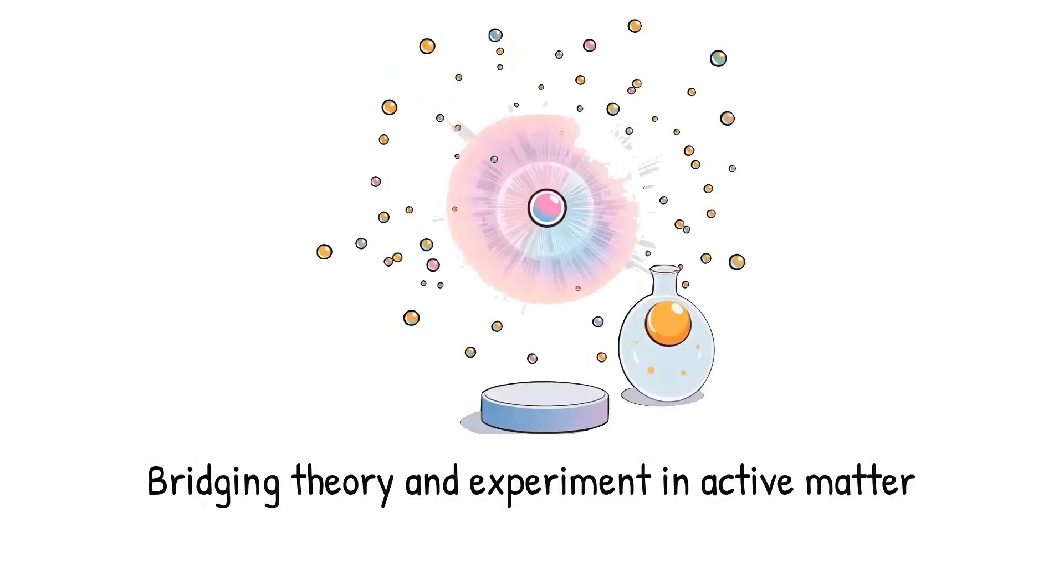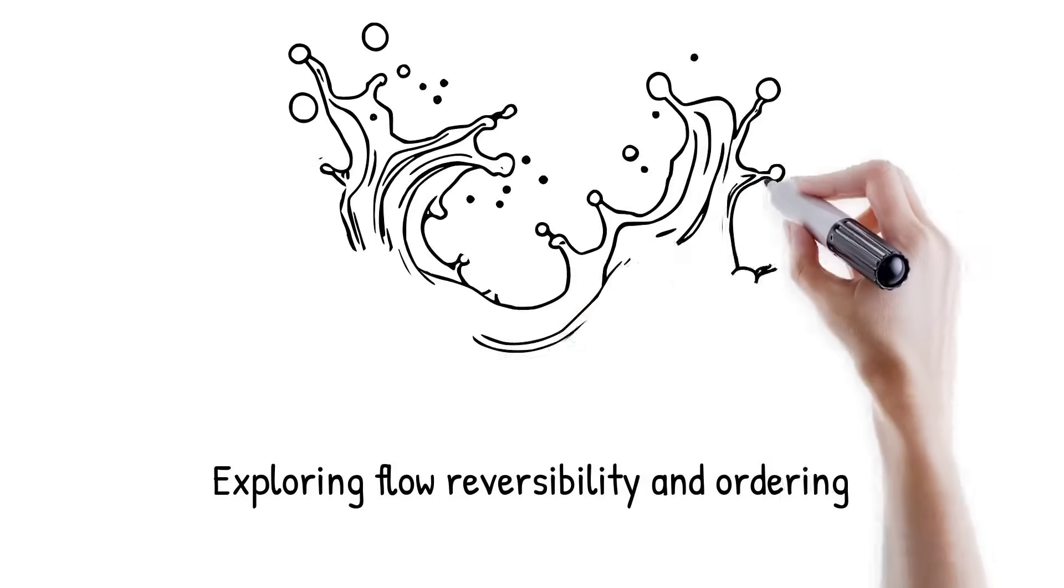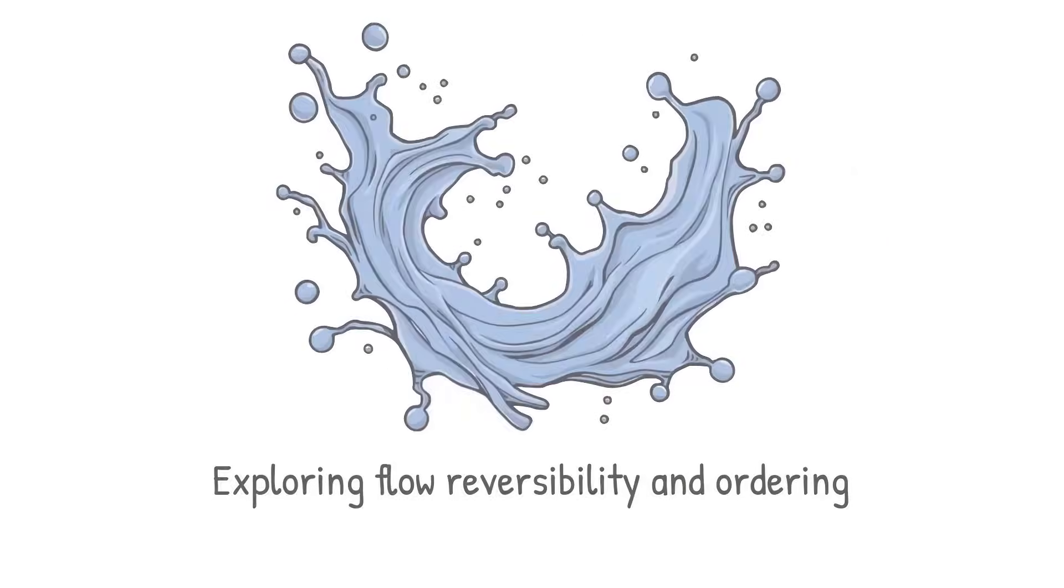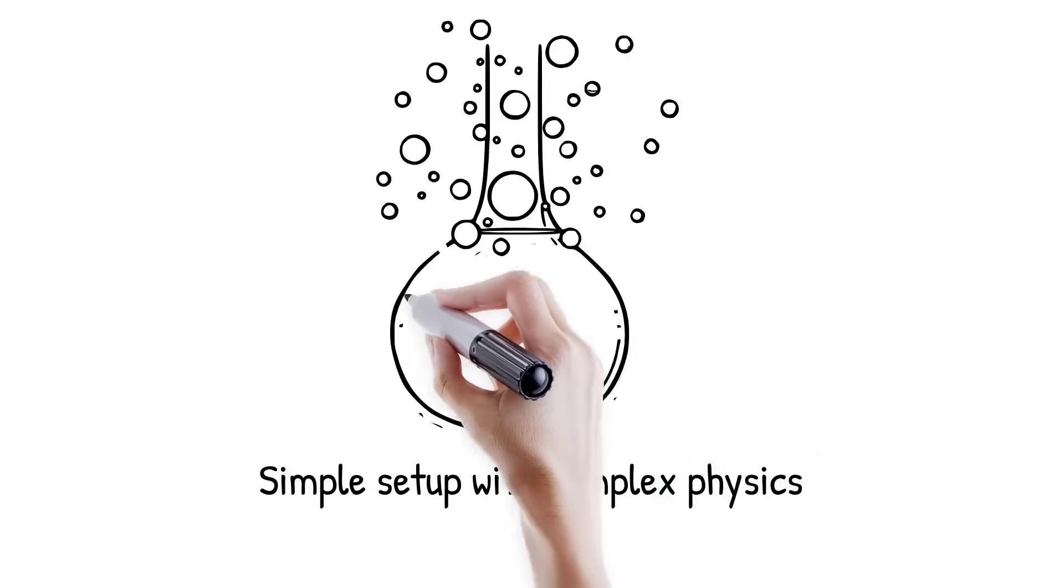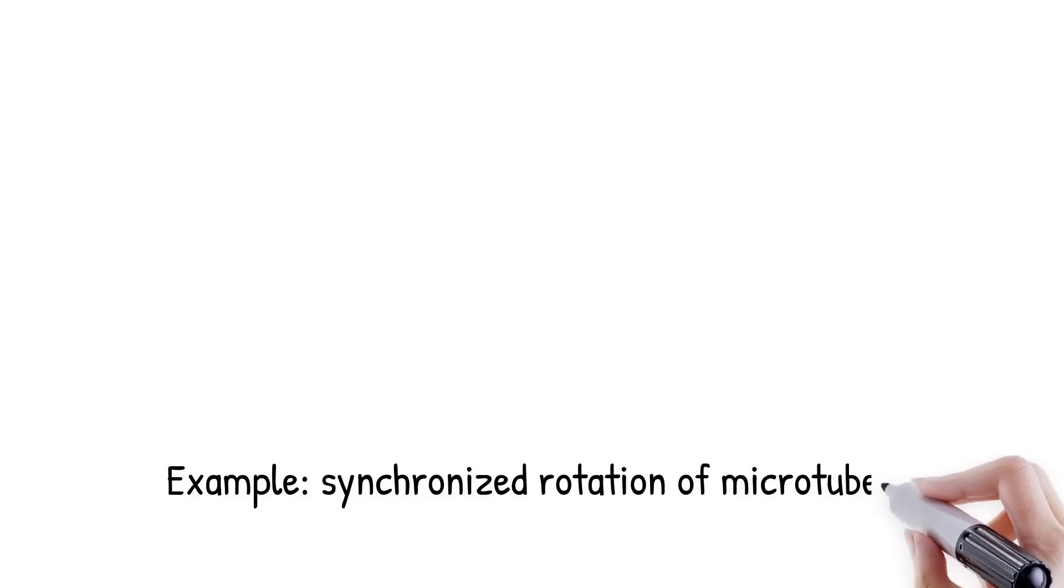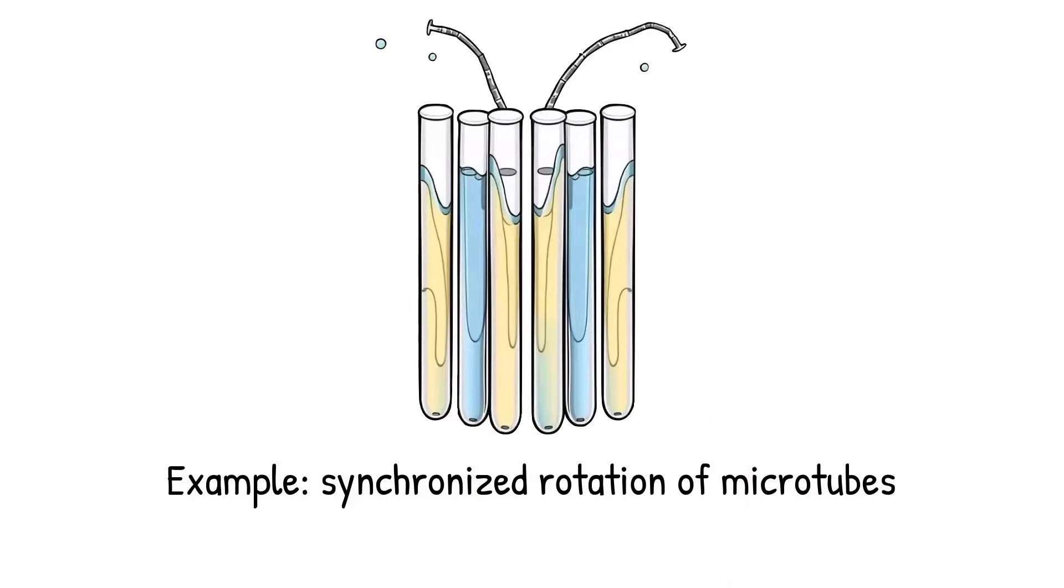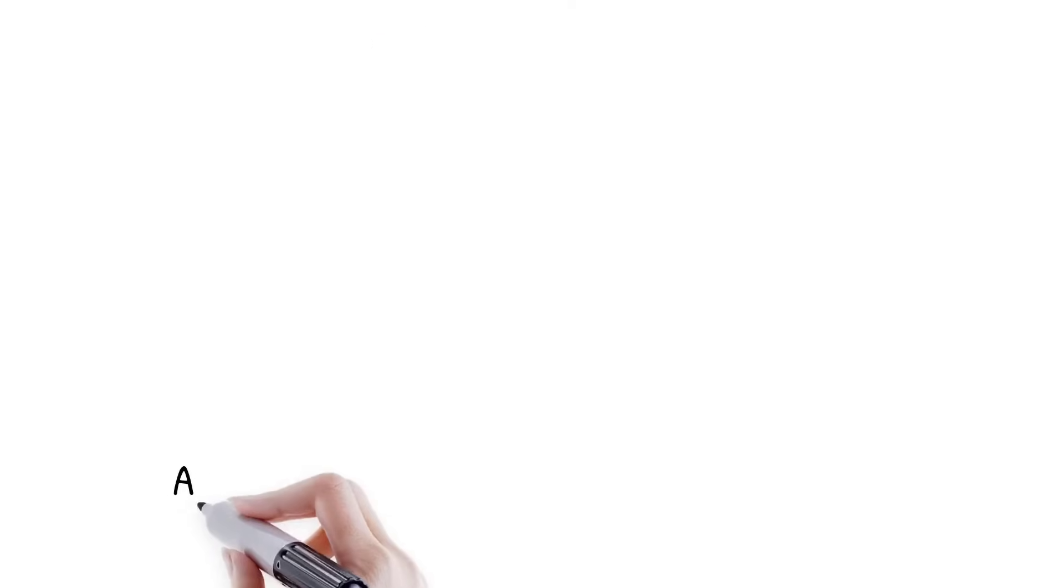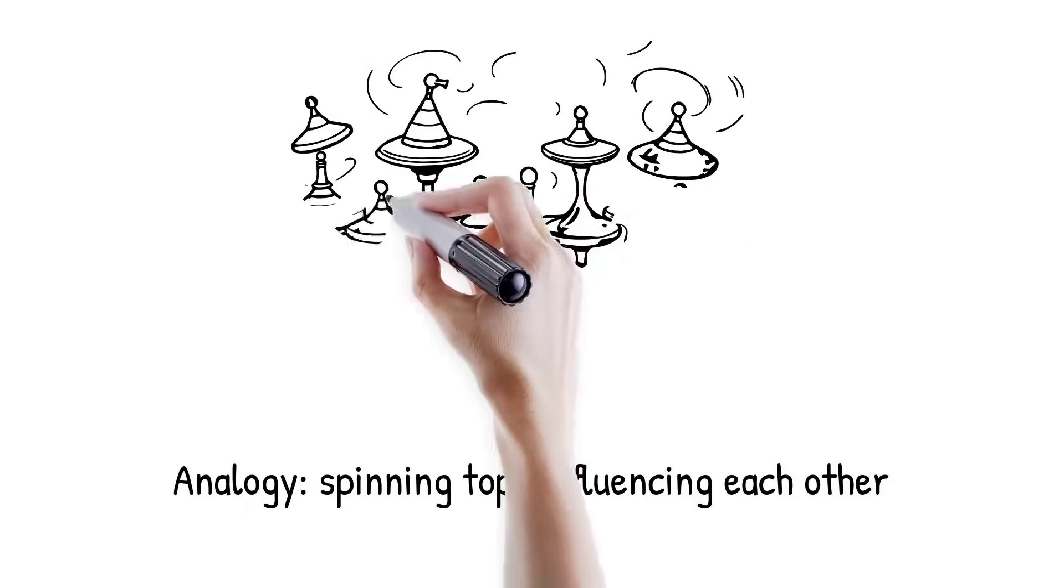Ensembles of magnetically rotated microtubes in isopropanol exhibit synchronized rotation and flow-induced coupling. It is like a set of spinning tops on a table that, while independent, influence each other through the air currents they create. At small particle sizes, the Reynolds number is much less than 1, placing the system firmly in the viscous-dominated regime. Here, inertia is negligible and flows are reversible, following the rules of Stokesian hydrodynamics.